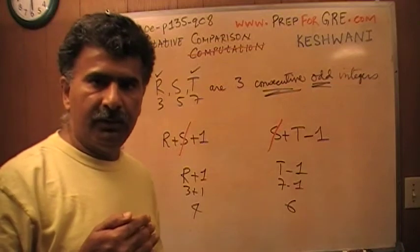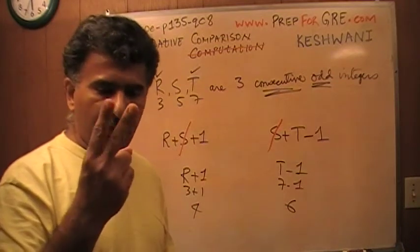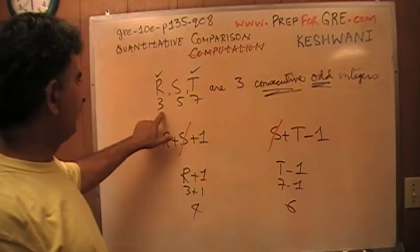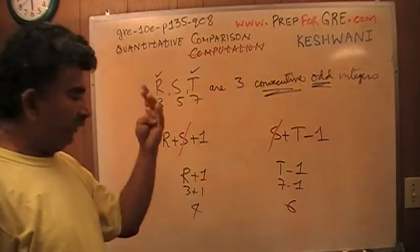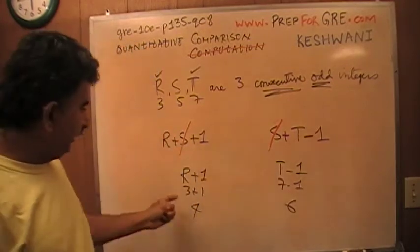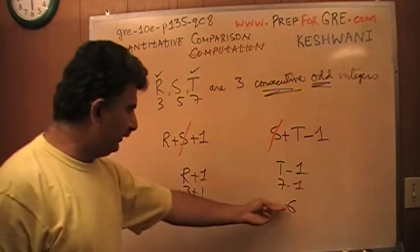If they are consecutive even integers, that means 2, 4, 6, 8, and 10. Therefore, between 2 consecutive integers, the difference is 2. By the time you go to the next one, the difference between R and T is 4. So you are taking 1 away from it, there is still a difference of 3, and then you are adding 1 to this, there is still a difference of 2 which is what we see here.